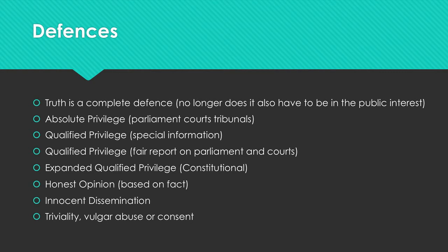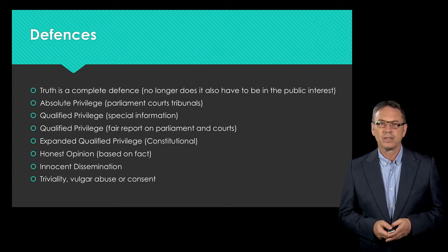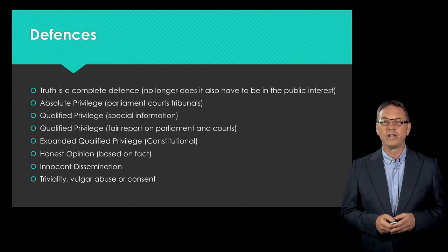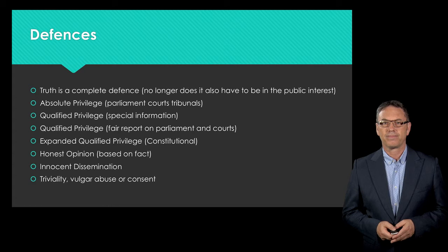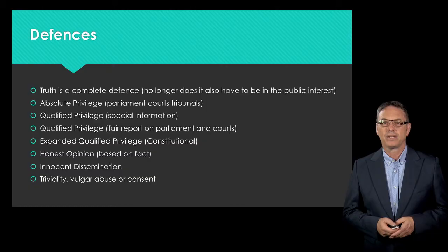Secondly, the defence of innocent dissemination may apply to booksellers, libraries, or newsagents who distribute material. The question is whether the secondary publisher could have known or ought reasonably to have known that the material was actually defamatory. Thirdly, a person may have a defence where the plaintiff is unlikely to suffer any harm because the claims are trivial and don't put their reputation at risk. Also, if someone consented to something being said about them — if they gave you permission — they can't then complain when it's published. As a media producer, you need to ensure the permission is clear and in writing.